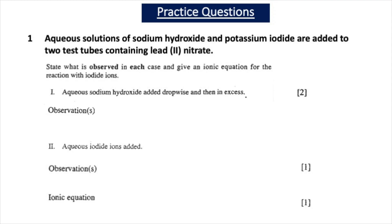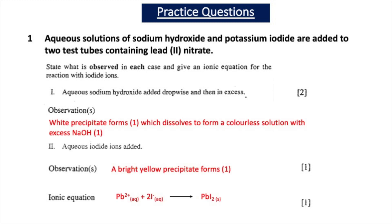Now let's test your understanding with some practice questions. Question 1 states that aqueous solutions of sodium hydroxide and potassium iodide are added to two test tubes containing lead-2 nitrate. State what is observed in each case and give an ionic equation for the reaction with iodide ions.